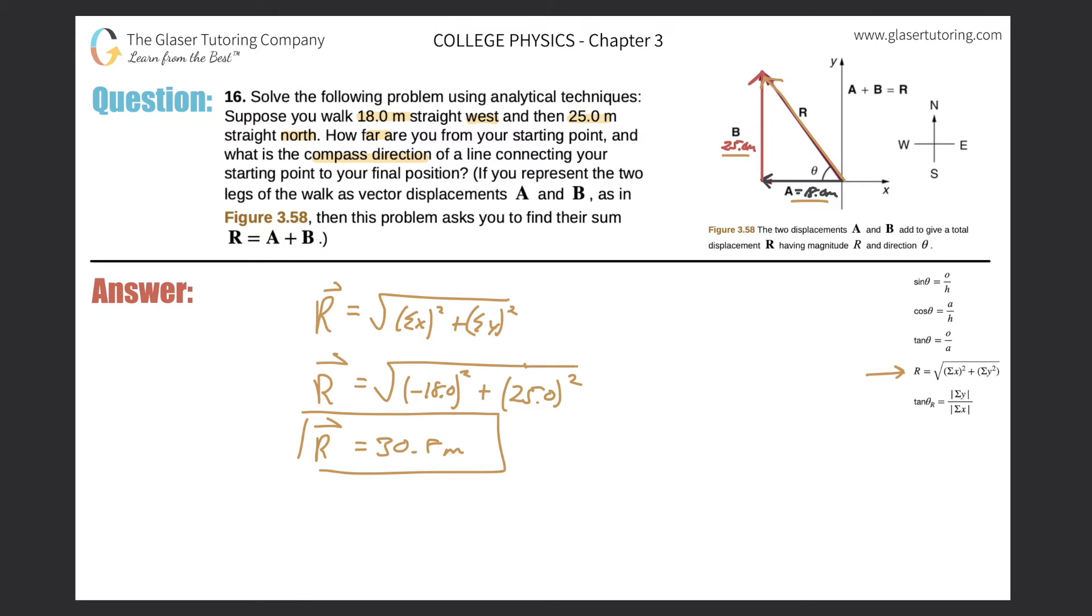Now for the second part, we have to figure out the compass direction. In our diagram they want to find this angle theta, and that angle is relative to the west axis here. So how do we find that theta value? Well, I have a formula over here on the right. It says that the tangent of my angle, of my resultant angle, should be equal to the absolute value of the sum of all the y's divided by the absolute value of the sum of all the x's.